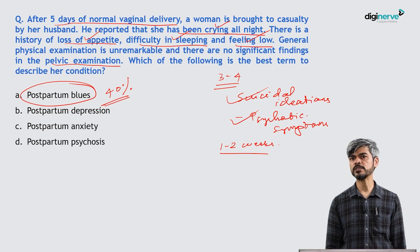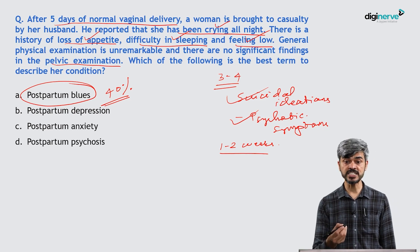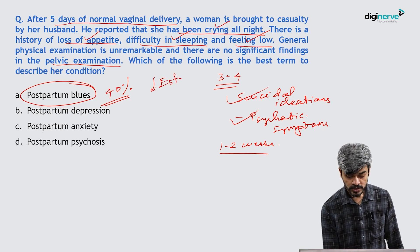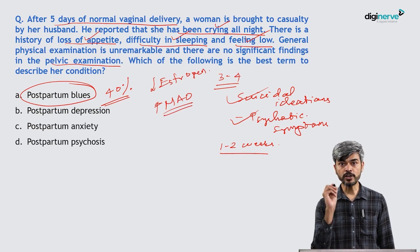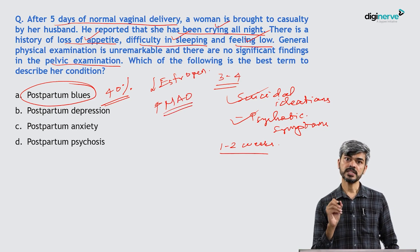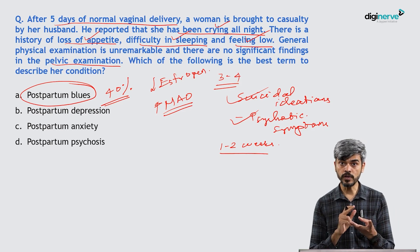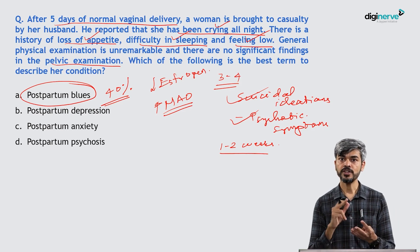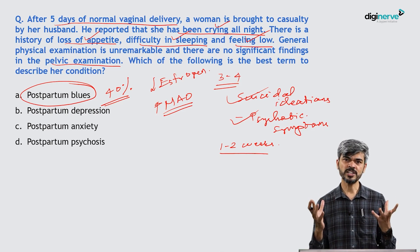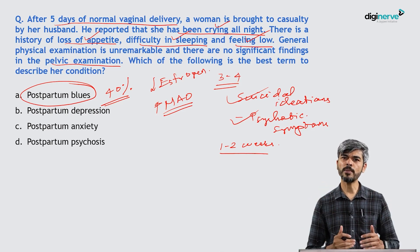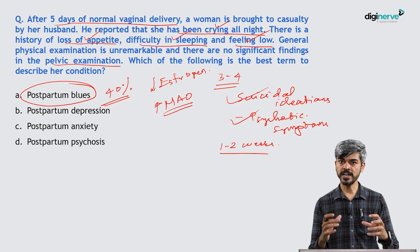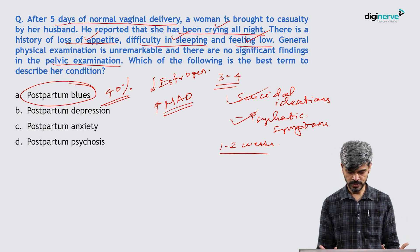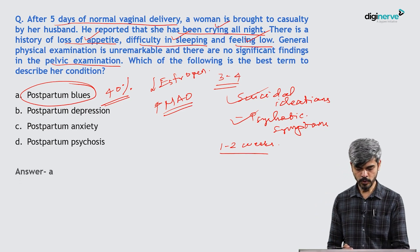Why does postpartum blues happen? It is because of hormonal changes — there is a dip in estrogen, which means increased levels of monoamine oxidase (MAO). Monoamine oxidase is the enzyme that breaks down catecholamines like serotonin, norepinephrine, and dopamine. Research has shown MAO levels increase after pregnancy, reducing serotonin and dopamine, leading to postpartum blues. The answer is postpartum blues.